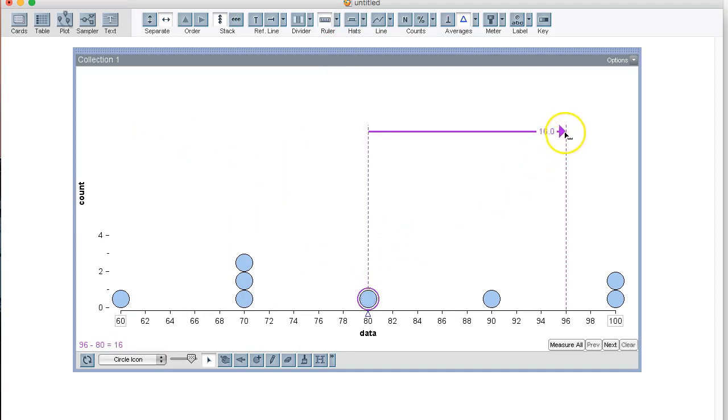Points above the mean are going to be recorded as a positive distance. For instance, the data point at 90 is 10 units above the mean, which is at 80. Now, if a point is below the mean, for example this point, then the distance will be recorded as a negative number. Let's see if we can get it to do that. Yeah, negative 20.